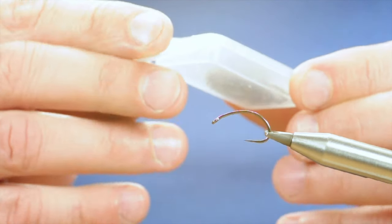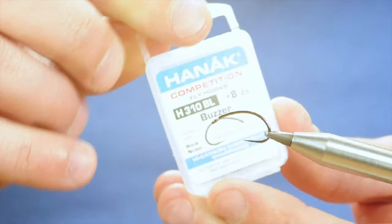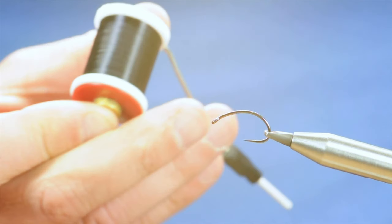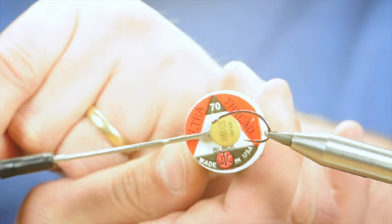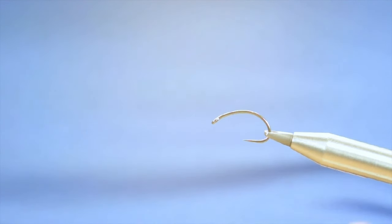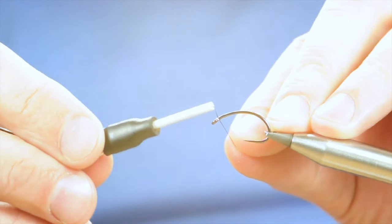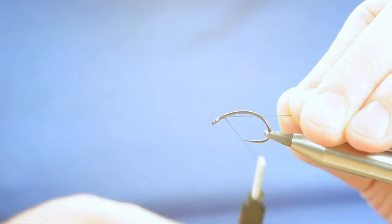In the vise, you'll see a Hanak 310 barbless buzzer hook, and this one's at size 8. Now, the first thing I'm going to do is cast on my thread, which is the UTC in black, this is the 70 denier. Just a little bit of wax to help me get set off. And I'm going to catch that in just a millimetre or so up from the eye of the hook.